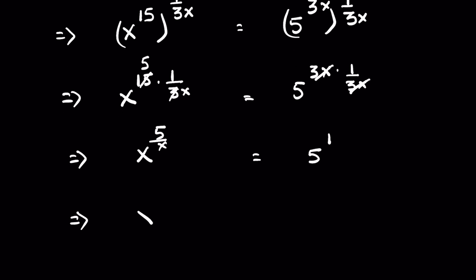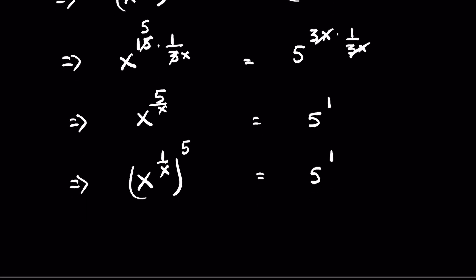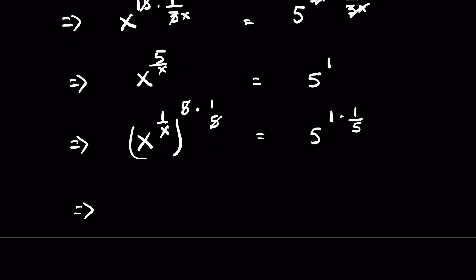Now this we can write as x raised to the power 1 upon x, whole raised to the power 5, is equal to 5 raised to the power 1. Let's raise both sides to the power of 1 upon 5. So the 5s get cancelled, giving x raised to the power 1 upon x is equal to 5 raised to the power 1 upon 5.